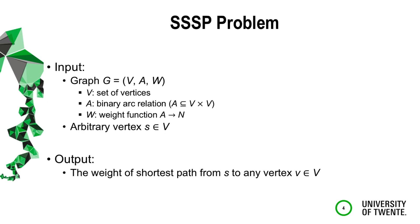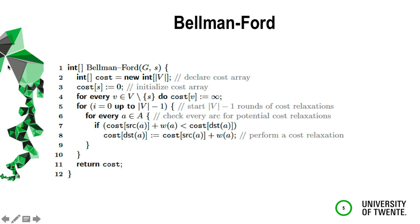This is the Bellman-Ford algorithm. We have an array 'cost' to store the shortest distance from source to all other vertices. Initially we assign zero for the source and infinity for all other vertices. There are two nested loops: in the outer loop we have the number of vertices minus one rounds, and in each round for each arc we do a relaxation — a comparison and computation. We compare the cost of the starting vertex of an arc plus the weight against the cost of the destination, and if it holds we update the cost of the destination to the smaller value.